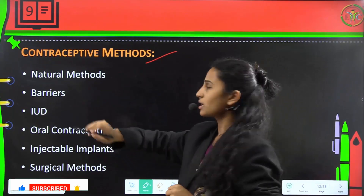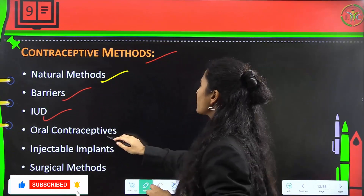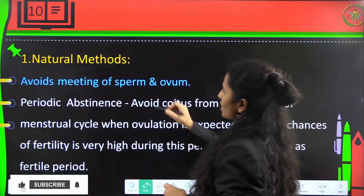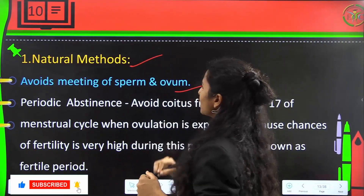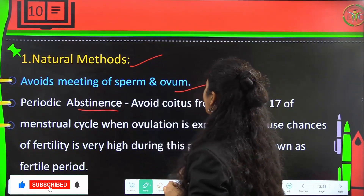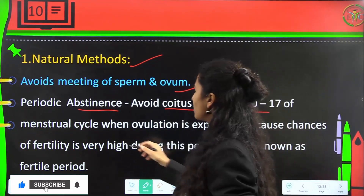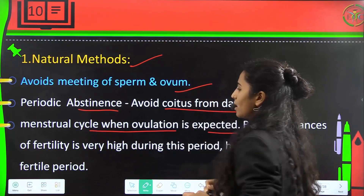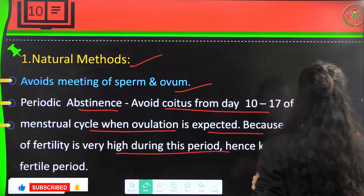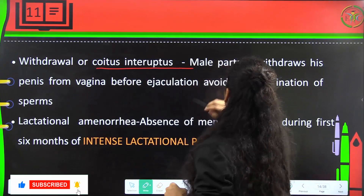Other contraceptive methods include natural methods, barriers, IUDs (intrauterine devices), oral contraceptives, injectable implants, and surgical methods. Natural methods avoid the meeting of sperm and ovum — this includes periodic abstinence, avoiding coitus from day 10 to day 17 of the menstrual cycle when ovulation is expected and fertility is very high. This period is known as the fertile period. Another natural method is withdrawal, or coitus interruptus.